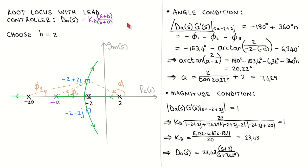It is clear that the locus will not pass through the desired closed loop poles and a proportional controller will therefore not work. A lead controller is often used to move the root locus towards the left half plane. This is exactly what we want, so we try a lead controller next.